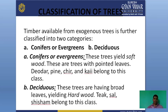Conifers or evergreen trees yield soft wood and have pointed leaves. Deodar, pine, and chair belong to this class. These are the conifer woods which have leaves like deodar and pine, belonging to the conifer or evergreen category.